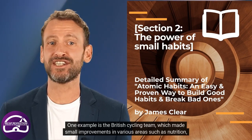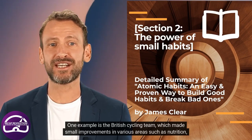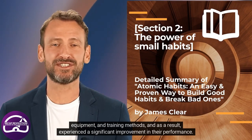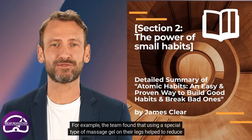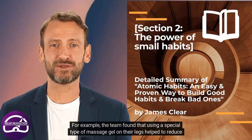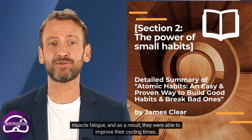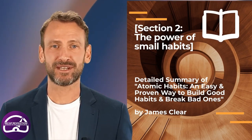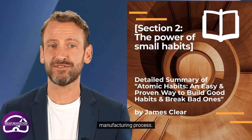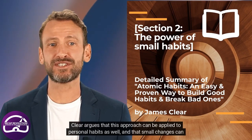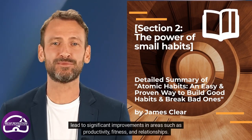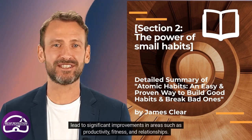One example is the British cycling team, which made small improvements in various areas such as nutrition, equipment, and training methods, and as a result, experienced a significant improvement in their performance. For example, the team found that using a special type of massage gel on their legs helped to reduce muscle fatigue, and as a result, they were able to improve their cycling times. Another example is the Japanese concept of Kaizen, which involves continuous small improvements in a manufacturing process.